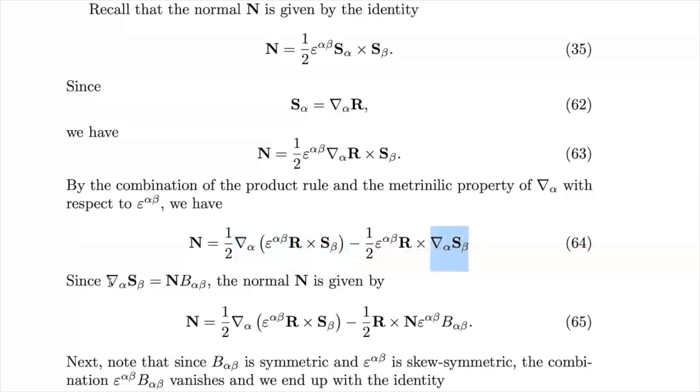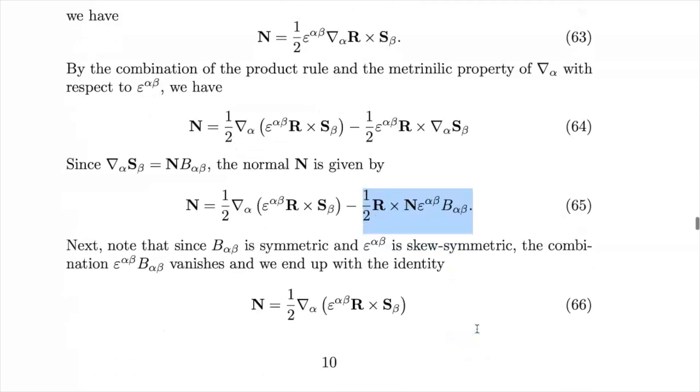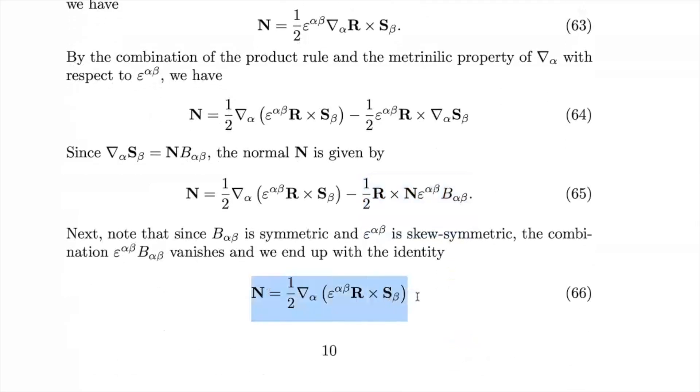And when the derivative is applied to the surface basis, the result is the curvature tensor multiplied by the unit normal. And one of the key characteristics of the curvature tensor is that it is symmetric. And so when we see this combination, which represents the trace of the matrix product of these two objects, the result is zero and therefore this entire term drops out.